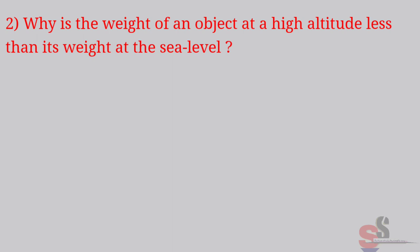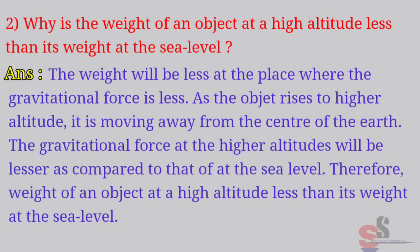Second, why is the weight of an object at a high altitude less than its weight at the sea level? Answer: The weight will be less at the place where the gravitational force is less. As the object rises to higher altitude, it is moving away from the center of the Earth. The gravitational force at the higher altitude will be lesser as compared to that of the sea level. Therefore, weight of an object at a high altitude less than its weight at the sea level.